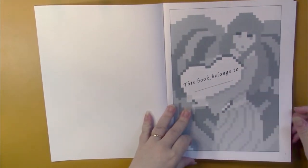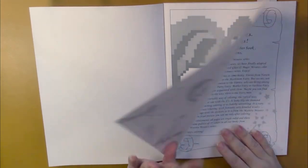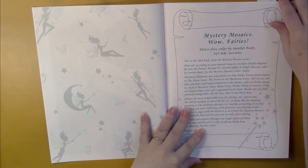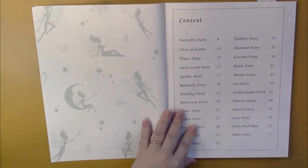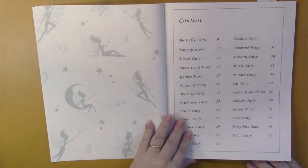We start with a This Book Belongs To page, an information page, and then the table of contents which gives us a name for each fairy.